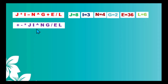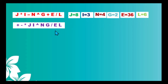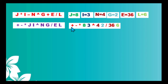The converted prefix expression is: addition operator, subtraction operator, multiplication operator, j, i, exponent symbol, n, g, division operator, e, l. After converting our given infix expression into prefix expression, we now substitute the values of our operands. We now have: addition operator, subtraction operator, multiplication operator, 8, 3, exponent symbol, 4, 2, division operator, 36, 6.